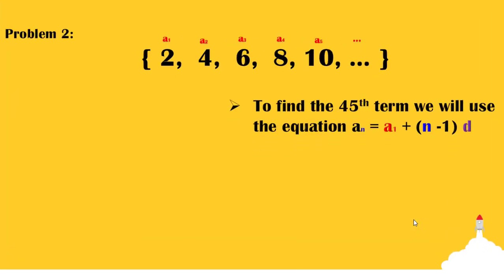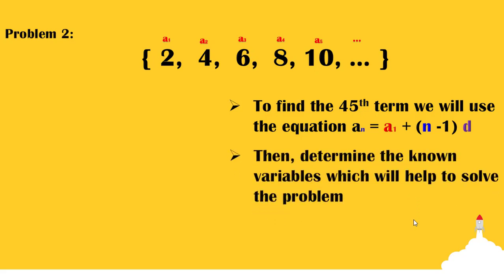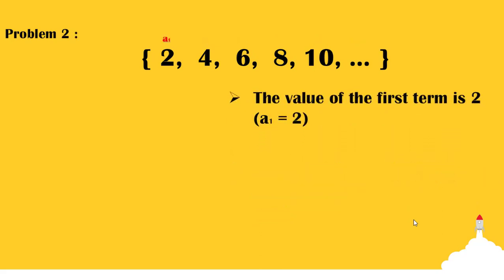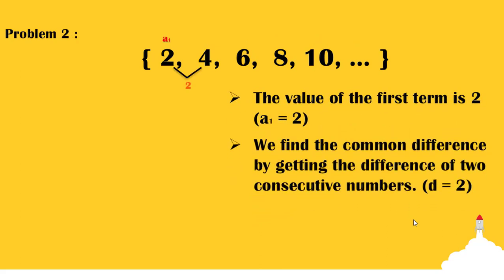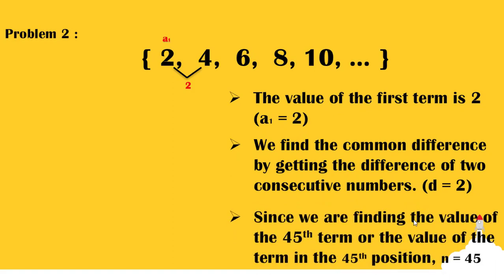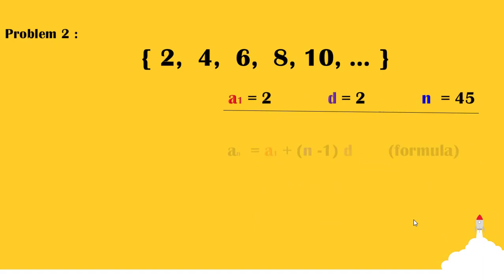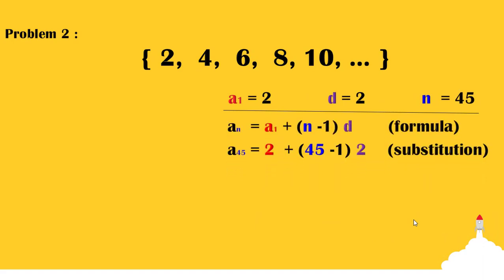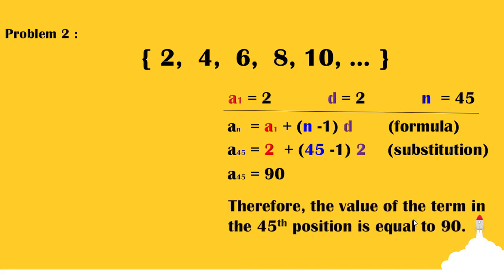We will use this formula to solve the problem. First, we identify the known terms: a sub 1 is equal to 2, d is equal to 2, and the position of the unknown term n is equal to 45. Using the formula, we substitute the values of the known terms, and by simplifying, we have a sub 45 is equal to 90. Therefore, the value of the 45th term is 90.